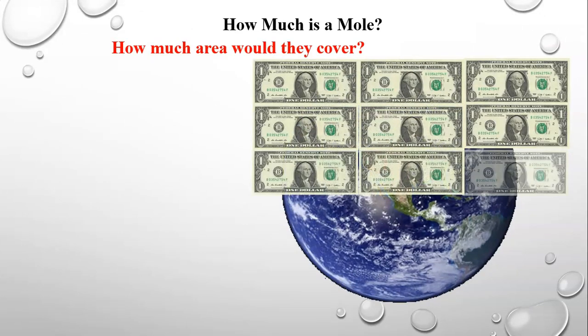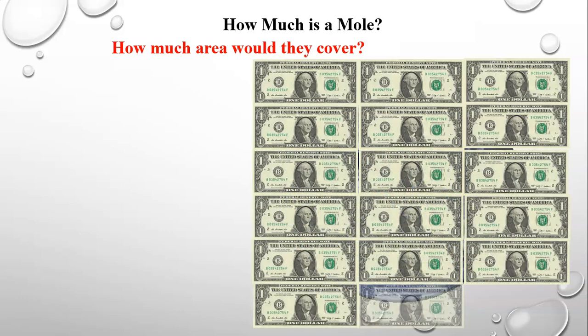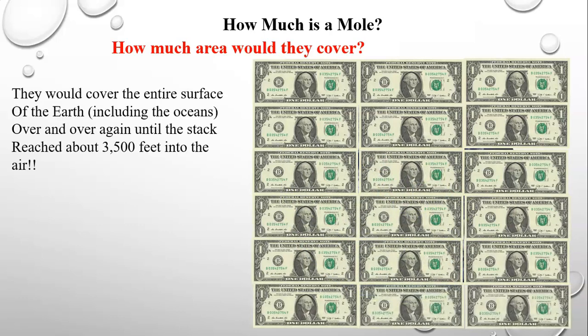They would cover the entire surface of the earth, including the oceans, over and over again until the stack reached about 3,500 feet into the air. That's everywhere — from North Pole to South Pole, every ocean, everything would be covered in dollar bills stacking 3,500 feet into the air. It's truly an amazingly large number.